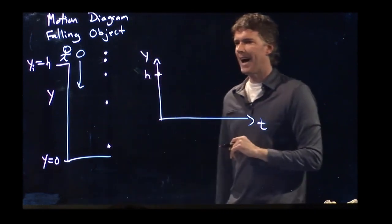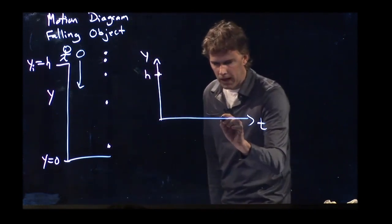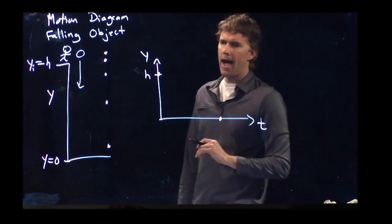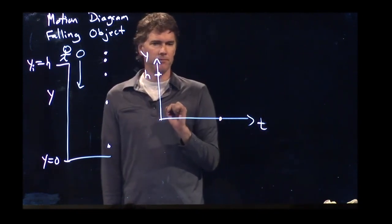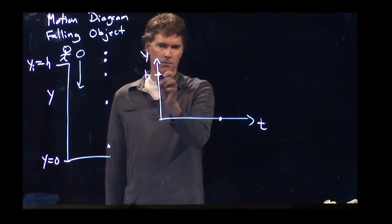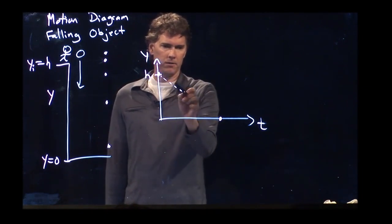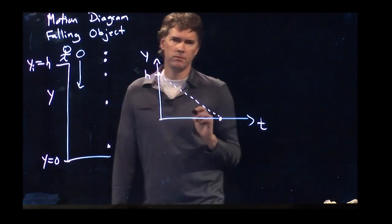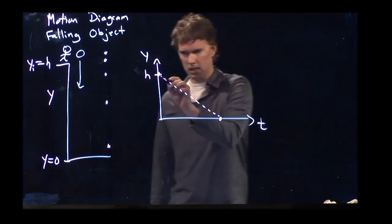That's where that first dot is. We know that the last dot has to be right there at y equals zero. And now, how do I connect them? Do I connect them like this? Do I connect them like this?